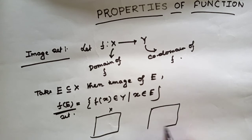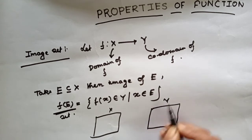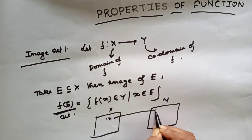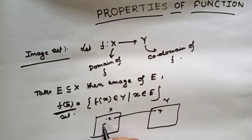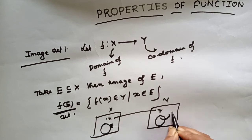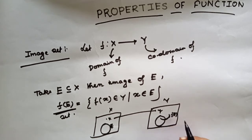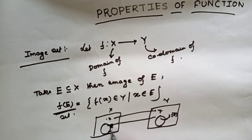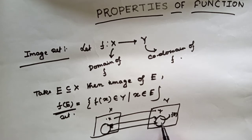This is the codomain. Let X map to Y. Let E be any subset of X — this is f(E). E maps to f(E), and f(E) is the image set.